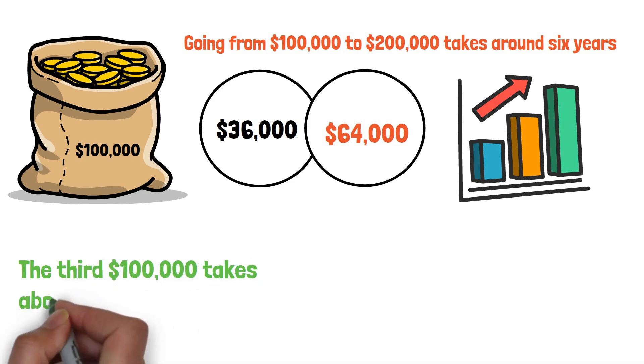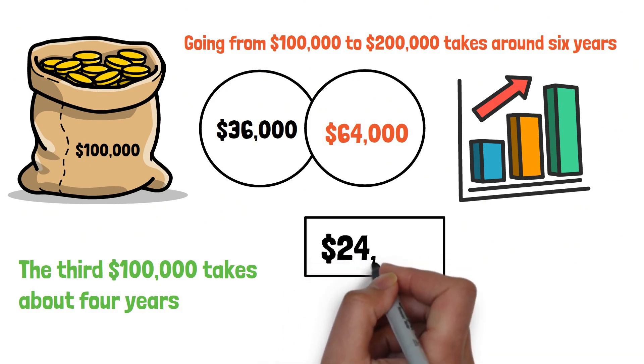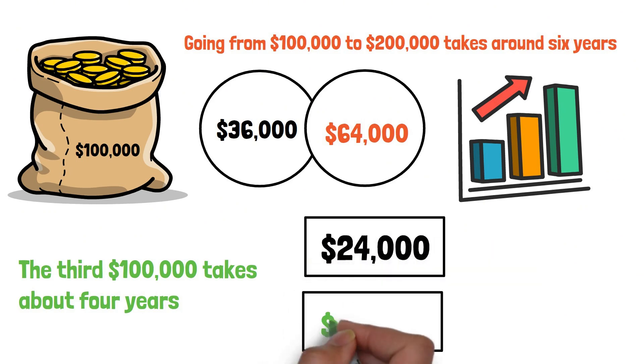The third $100,000 takes about 4 years. You put in around $24,000, but compounding adds roughly $76,000.